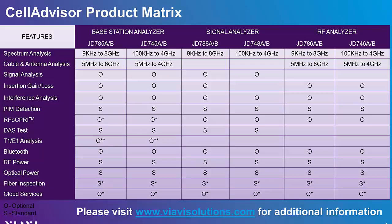The JD740B and the JD780B are the most full-featured versions of the Cell Advisor platform, with some models more focused on RF tasks and others more focused on signal analysis tasks. The JD740B series operates up to 4 GHz, and the JD780B series operates up to 8 GHz. This video is created using the JD780B. Please visit www.viavisolutions.com for additional information.